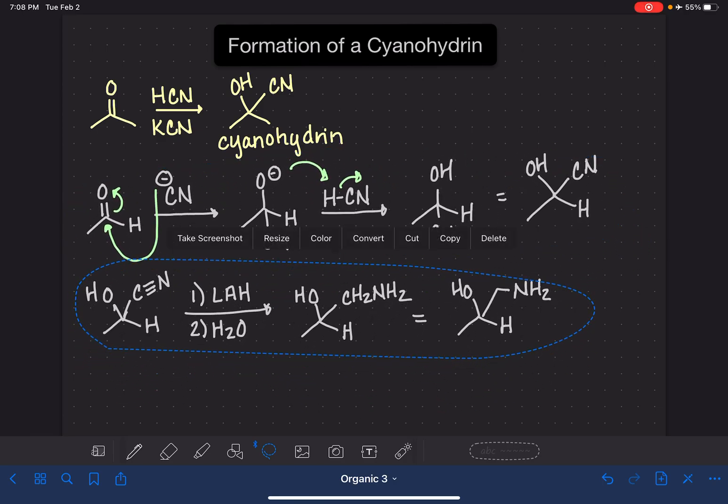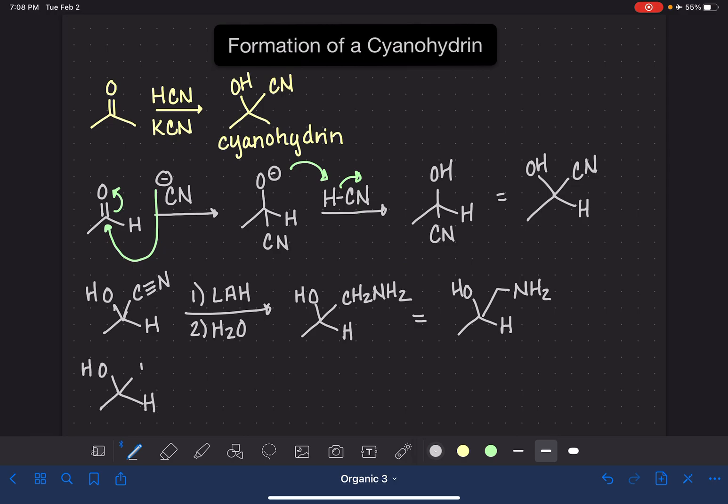The second reaction that cyanohydrins can do is with some sort of strong acid, H3O plus and heat. This reaction will convert the carbon nitrogen triple bond into a carboxylic acid functional group, which we represent with condensed notation like this.